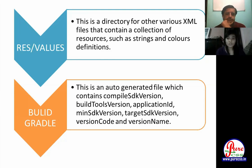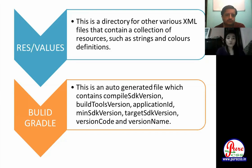The build.gradle is an auto-generated file which contains the SDK version, build tools version, application ID, version code, and version name. The main benefit is that your app will work on any Android mobile device.